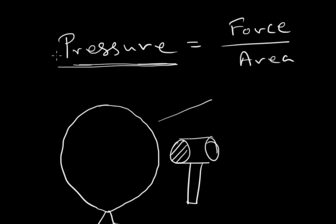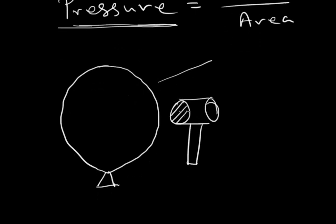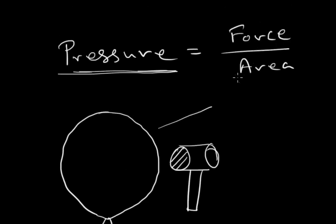From this equation we can say that the pressure applied by the hammer is quite low because the effective area of the hammer surface is very high. So, the denominator is very high and the pressure is low.